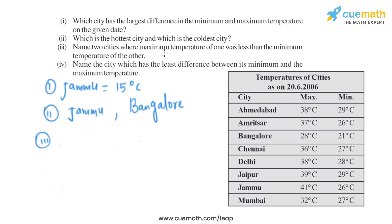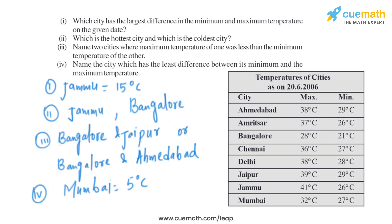For sub-part three, we need two cities where the maximum temperature of one was less than the minimum temperature of the other. The maximum temperature of Bangalore is 28 degrees Celsius. The minimum temperature of Jaipur is 29 degrees Celsius, which is more than Bangalore's maximum. Also, the minimum temperature of Ahmedabad is 29 degrees Celsius, which is also more than Bangalore's maximum temperature.